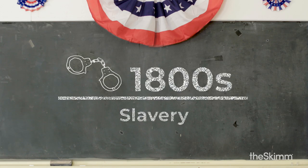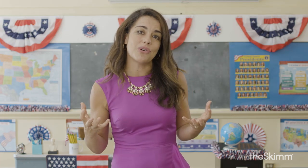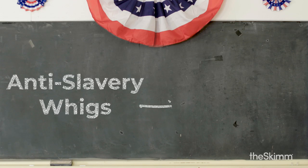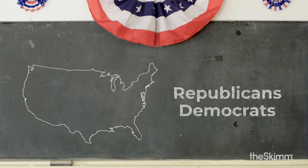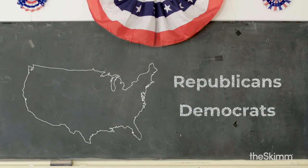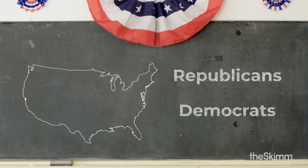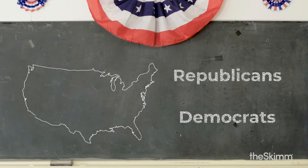In the mid-1800s, slavery expansion became a major issue. In the Whig Party, there was a real division over this, so anti-slavery Whigs went on to become the Republican Party. At the time, the Republican Party was gaining popularity in the North while the Democratic Party was popular in the South.